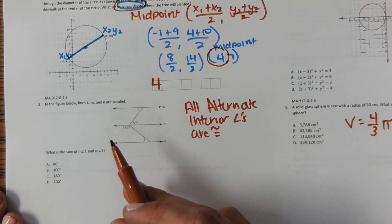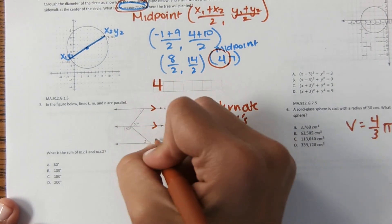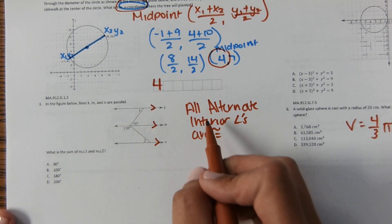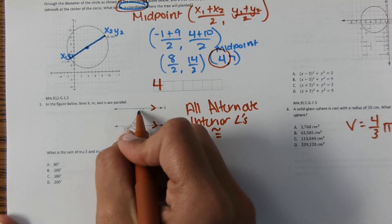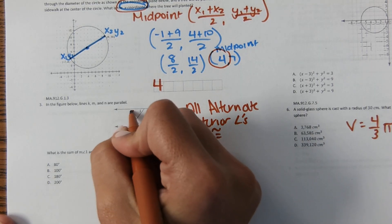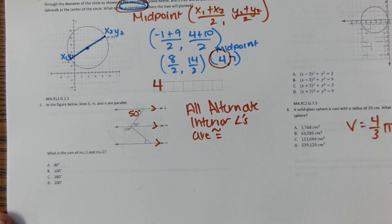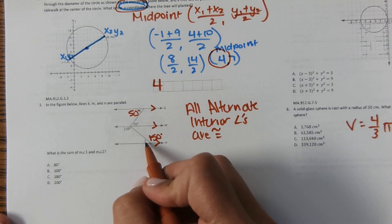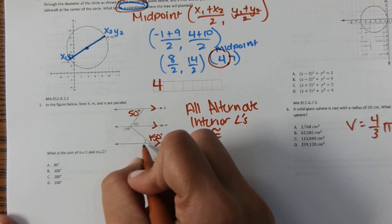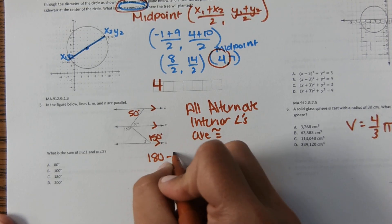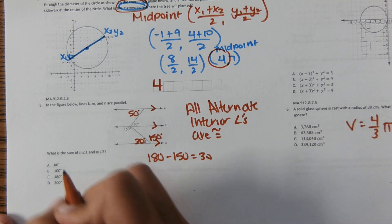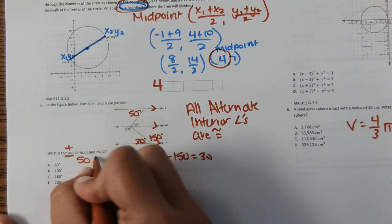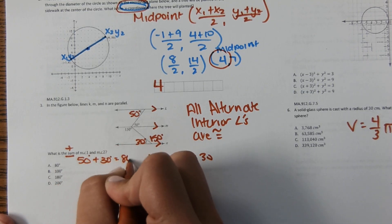In the next figure, lines k, m, and n are parallel. We need the sum of the measures of angles 1 and 2. Alternate interior angles are congruent when lines are parallel, so if one angle is 50°, angle 1 is also 50°. For angle 2: alternate interior angles give 150°, but angles 1 and 2 form a linear pair, so 180° − 150° = 30°. The sum is 50° + 30° = 80°.